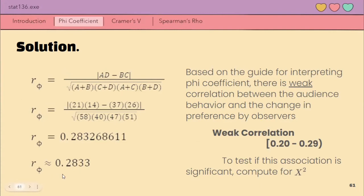After we plug those in, we will arrive at phi coefficient which is approximately 0.283. Based on sa table, sa interpretation section natin, this indicates a weak correlation between audience behavior and the change in preference by observers.